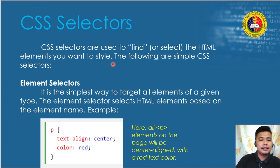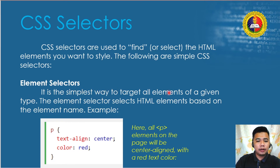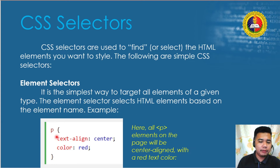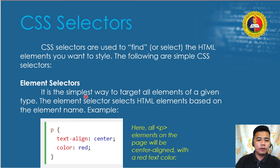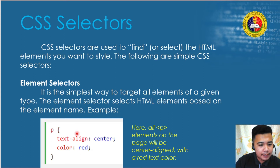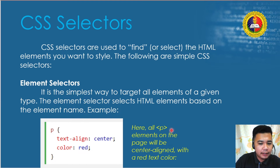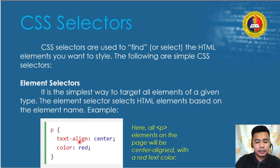The element selector is the simplest way to target all elements of a given type — it selects HTML elements based on the element name. For example, 'p' for paragraph. If you want to format all paragraph elements, you just type 'p' in your CSS file. In this example, text-align: center and color: red means all paragraph elements on the page will be center-aligned with a red text color.